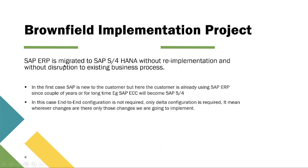Brownfield implementation project: SAP ERP is migrated to SAP S4 HANA without re-implementation and without disruption to existing business processes. In the first case, SAP is new to the customer, but here the customer is already using SAP ERP for a long time — for example, the customer is using SAP ECC and now wants to implement SAP S4 HANA. In this case, end-to-end configuration is not required, only delta configuration is required. Delta configuration means only the changes that exist are implemented. This is about the Brownfield implementation project.